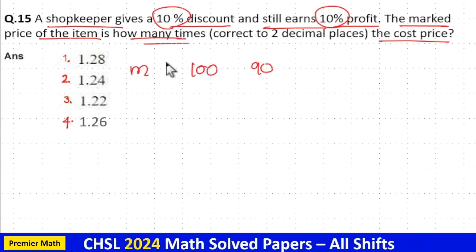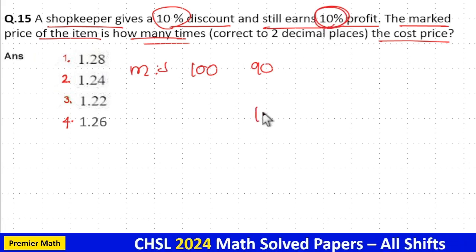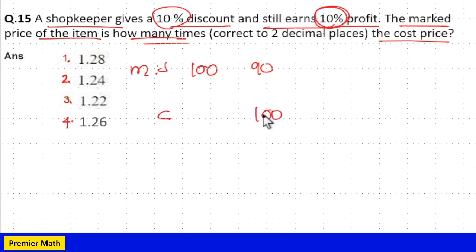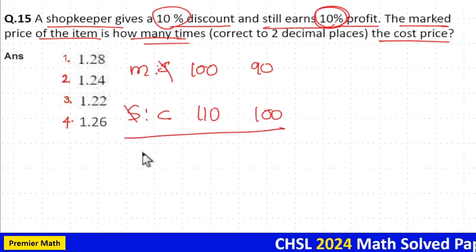Again, 10% profit means if 100 rupees is the cost price, then 100 plus 10 equals 110 rupees is the selling price. Now I can cancel selling price here. I'll get marked price and cost price ratio.